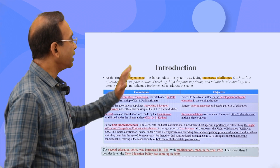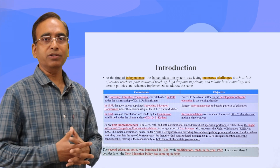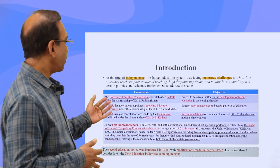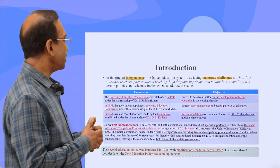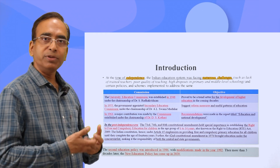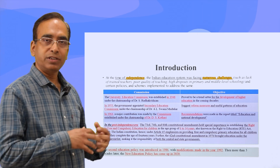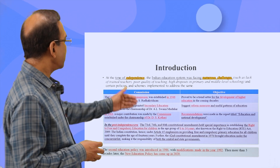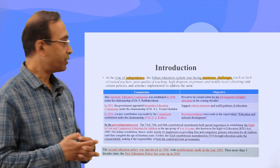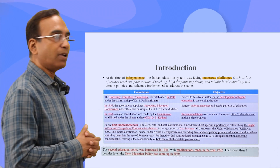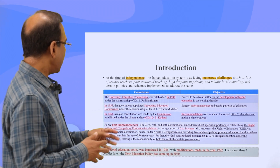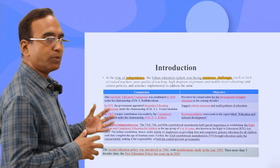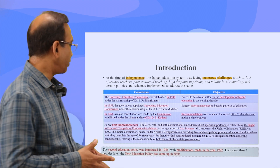Since Indian independence, the Indian education system has been considered one of the most important areas to develop human capital. India set up different committees time to time, got recommendations, and changed policy accordingly. The University Education Commission was established in 1948 under the chairmanship of Dr. Radhakrishnan, our former president. Then we had the Kothari Commission in 1964, which provided the framework of the Indian education system.